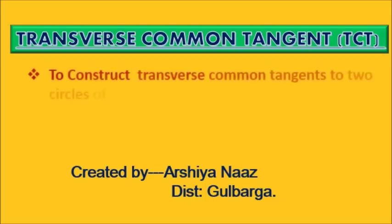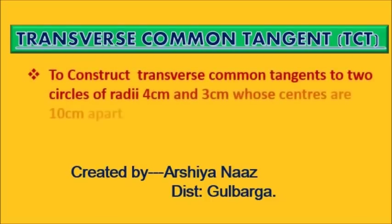To construct transverse common tangents to two circles of radii 4 cm and 3 cm whose centers are 10 cm apart,